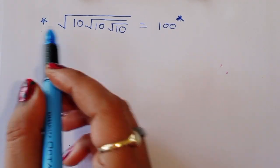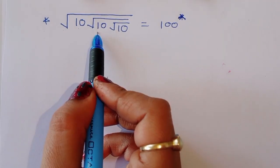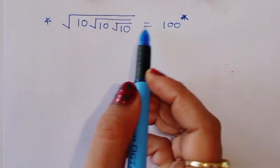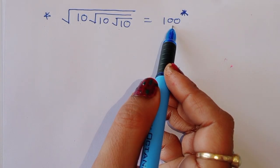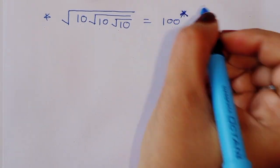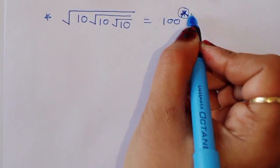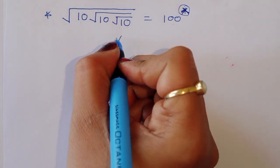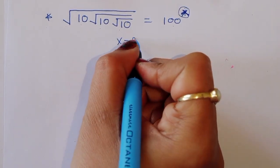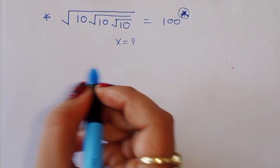The question is given: square root of square root of square root of 10 is equal to 100 raised to x. We have to find out the value of x.